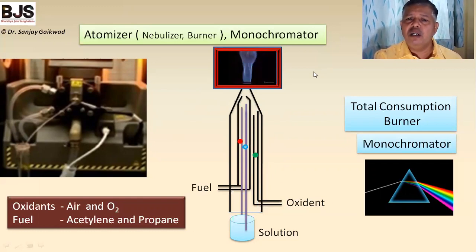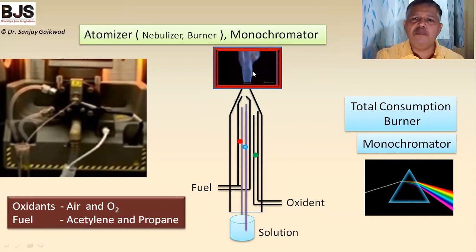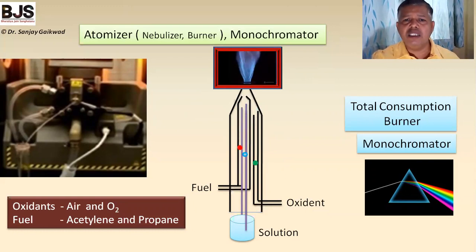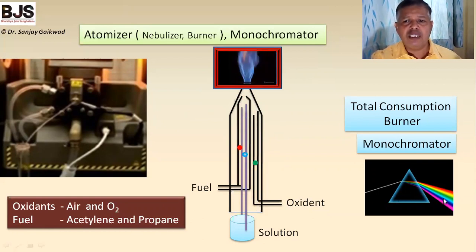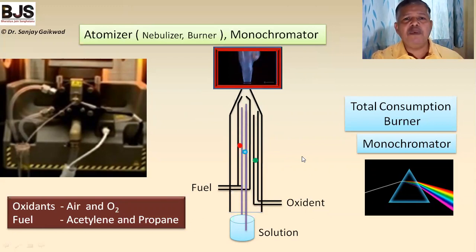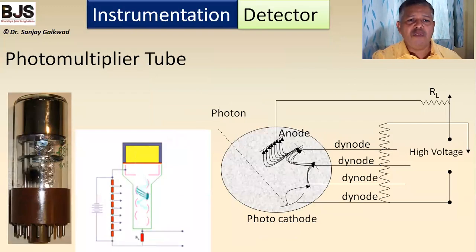After emission of radiation from the flame, many types of radiations come out. To select one specific radiation we require a prism or monochromator, which allows us to select any specific wavelength corresponding to the metal ion being monitored.